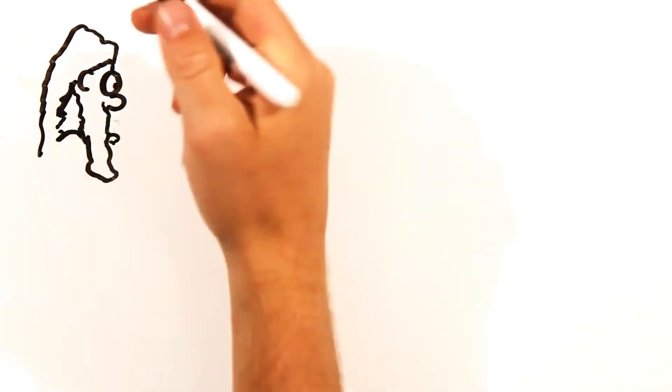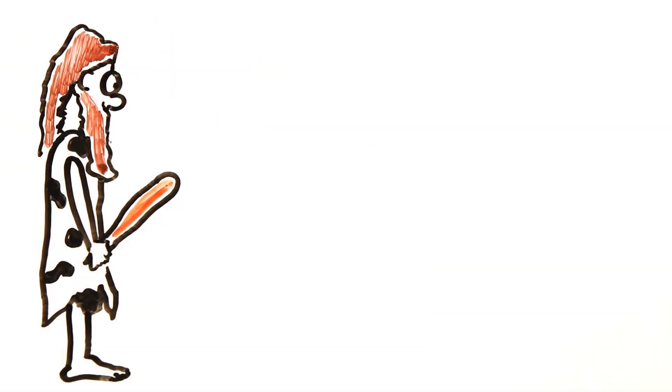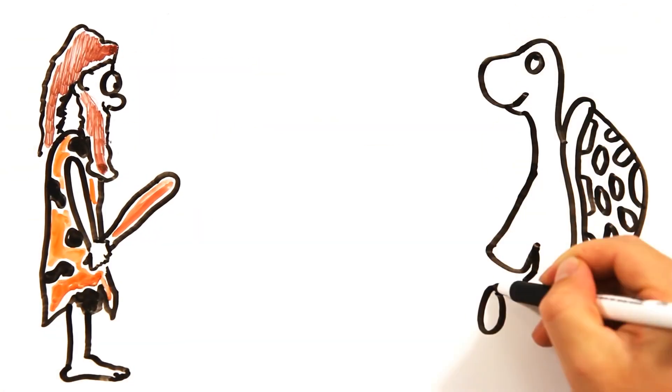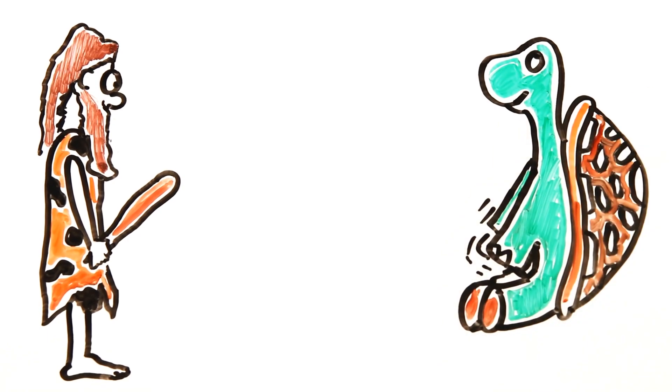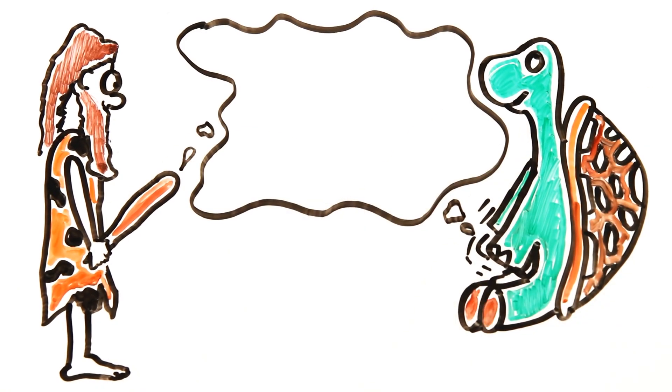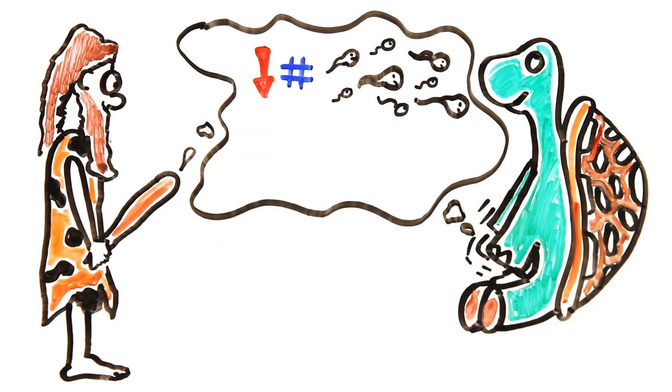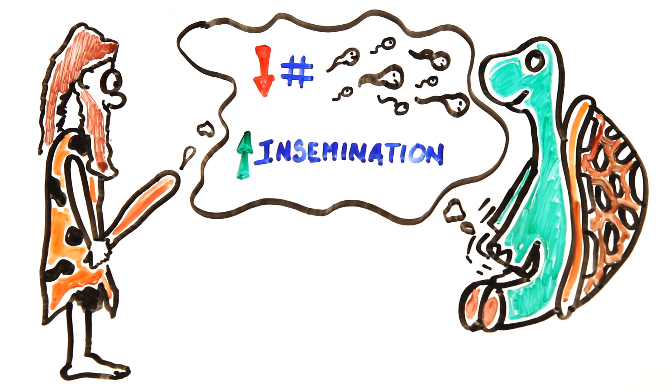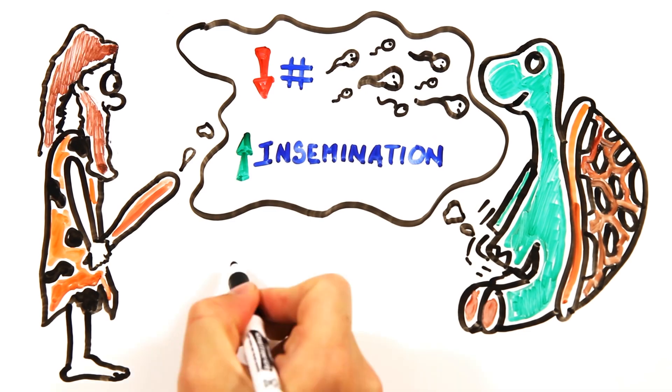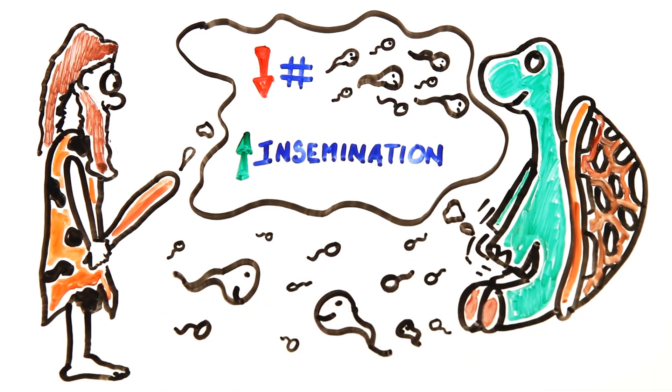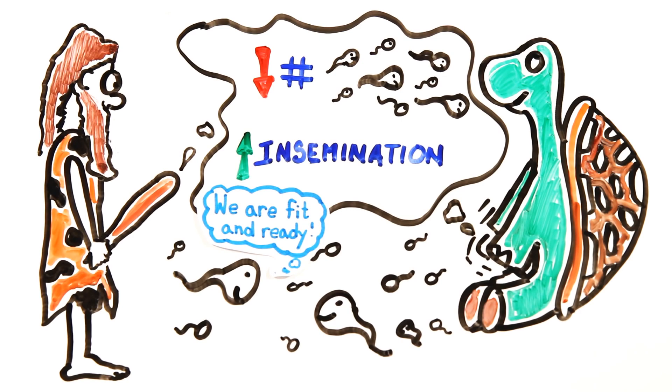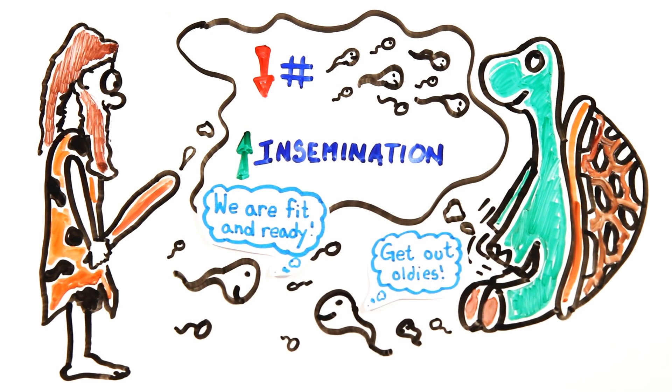But why have humans and animals evolved to masturbate if it's seemingly a waste of energy or semen in men? Well, it turns out that self-love can actually improve the quality of sperm. A study showed that recent male masturbation reduced the number of sperm inseminated at the next copulation, but not the number retained by the female. From this, it was concluded that masturbation is a male strategy to improve the fitness of their sperm, as younger sperm have a higher likelihood of insemination.